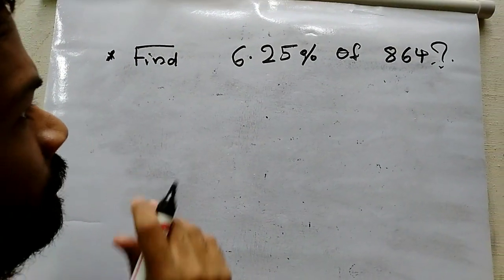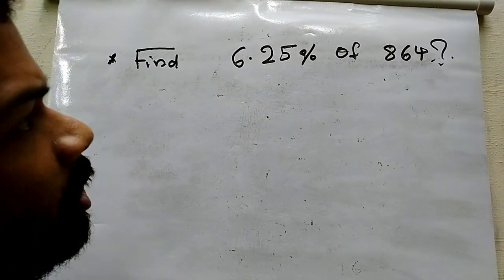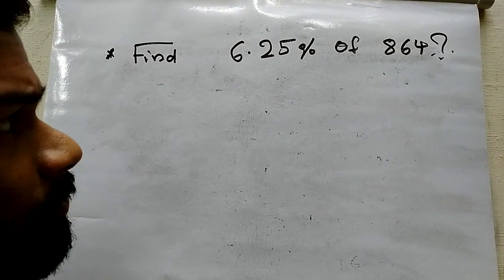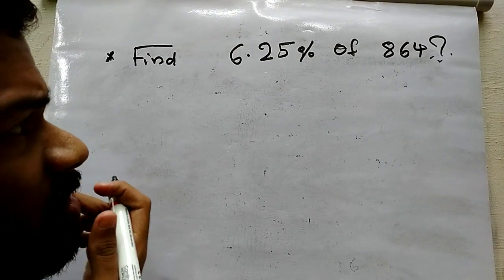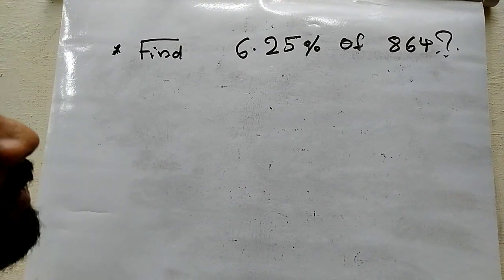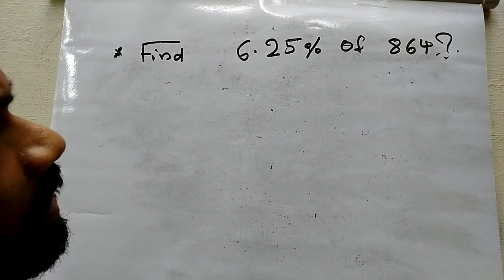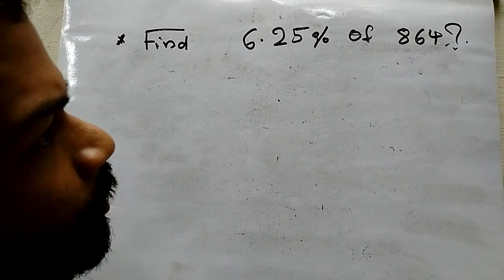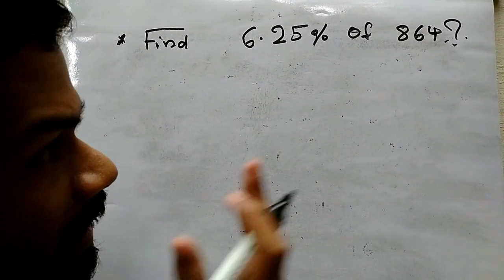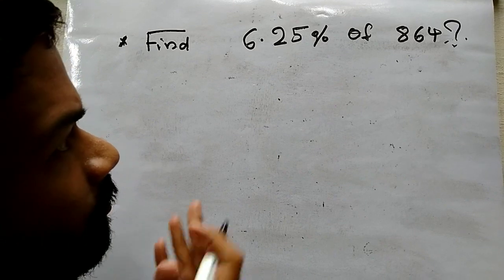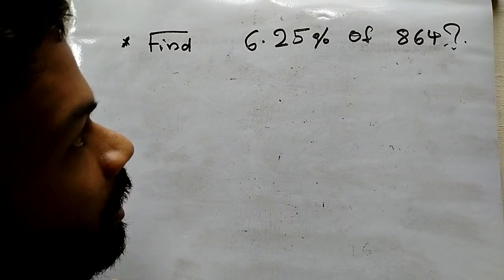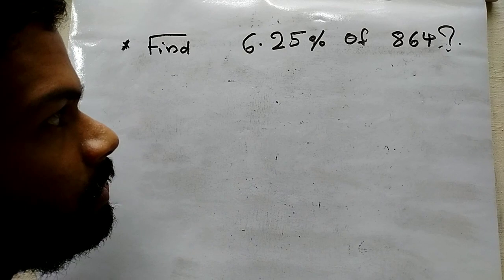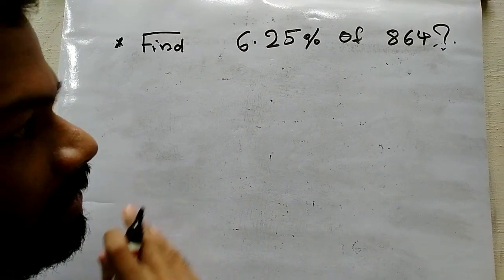Here is your question: find the 6.25 percentage of 864. In your basic method, or your common method, you need to multiply 864 with 6.25 and then divide it by 100.